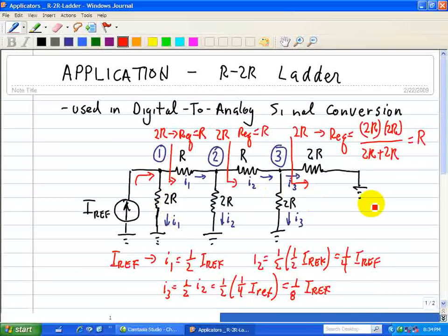So we can see, as we pass through this ladder network, half of the current is split when we go through node 1, node 2, and node 3.